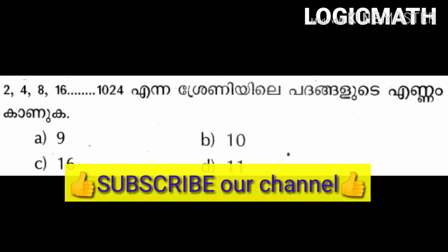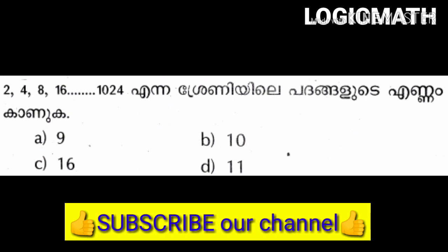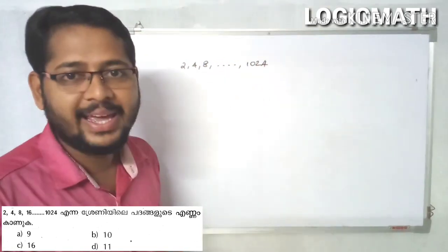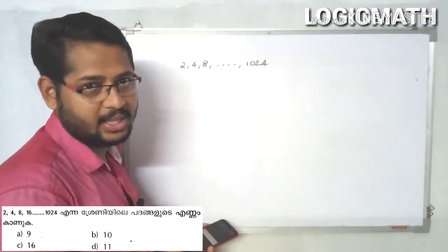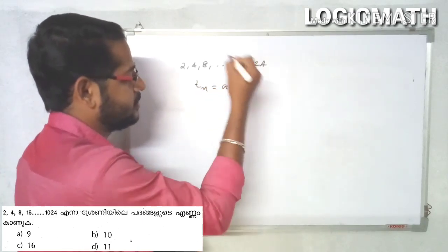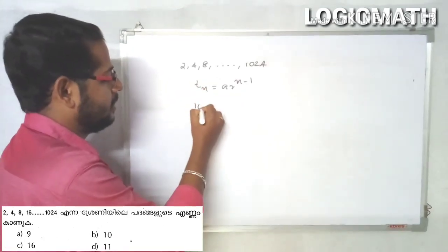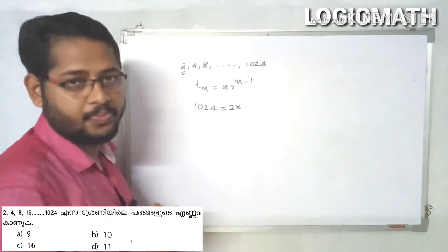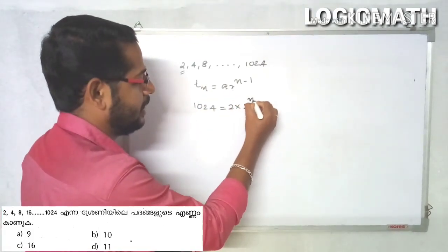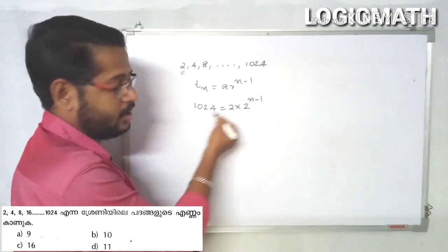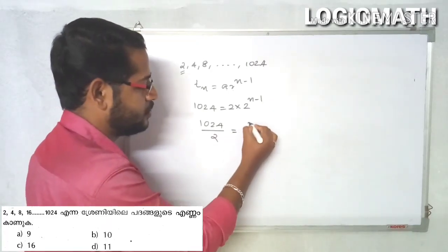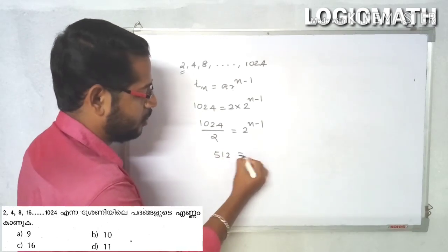The sequence is 2, 4, 8, up to 5 terms. The corner is here: 2, 4, 8, etc. If you want to find the nth term, tn is equal to the formula a times r to the power n minus 1. So tn: the common ratio r equals second term divided by first term = 4 by 2 = 2. We have 1024 equals 2 raised to the power n minus 1. So 512 equals 2 to the power n minus 1.